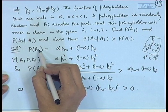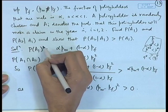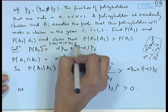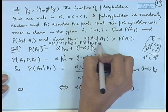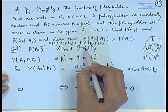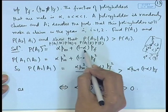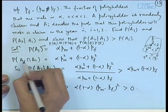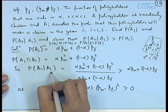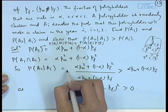Let me give the solution. Using the theorem of total probability, P(A1) = P(A1|male)·P(male) + P(A1|female)·P(female) = alpha·P_m + (1−alpha)·P_f. By the same argument, P(A1 ∩ A2) = alpha·P_m² + (1−alpha)·P_f². Therefore, the conditional probability P(A2|A1) = P(A1 ∩ A2) / P(A1).